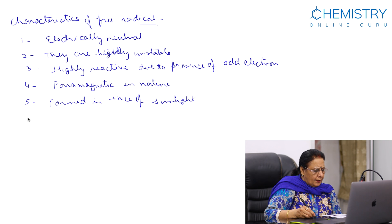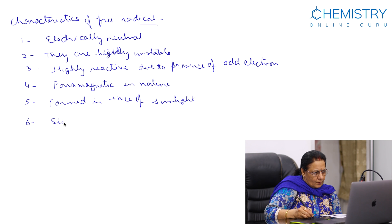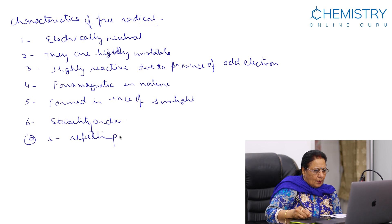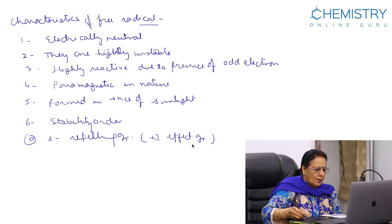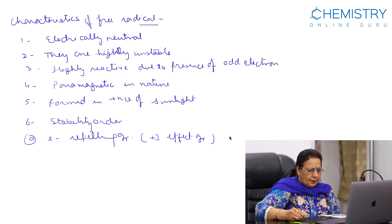Another important point is stability. Stability order: electron repelling group, means plus I effect group, increases the stability of free radical.